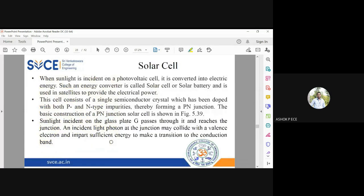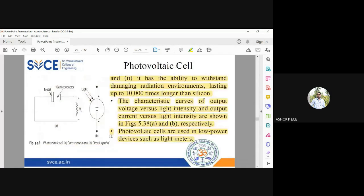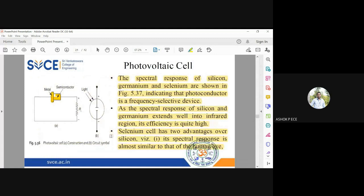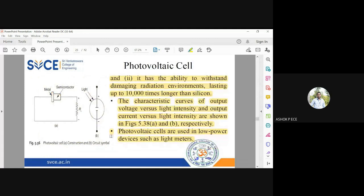The photovoltaic cell works on the photovoltaic effect. It consists of a PN junction diode without any biasing connections—no forward or reverse bias. Light is focused on the depletion region, and by the property of the device, incident light energy is converted into electrical energy in the form of voltage or current.